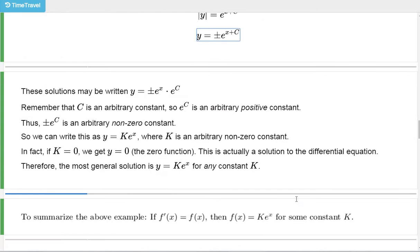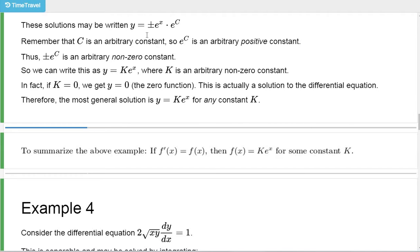It's possible to rewrite these solutions. Using the laws of exponents, we can rewrite it as y equals plus or minus e^x times e^c. Now remember, c is just any arbitrary constant. e^c is some sort of arbitrary positive constant — e^c can never be negative or zero, but you can get any positive number. When you add the plus or minus, you can get any arbitrary nonzero constant. So we could rewrite this as y equals k times e^x, where k is an arbitrary nonzero constant.